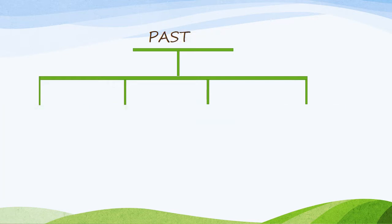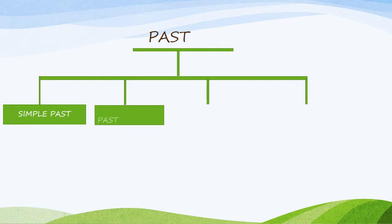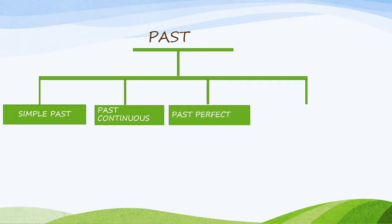Past tense is divided into four types. First, simple past. Second, past continuous. Third, past perfect. And last one, past perfect continuous.